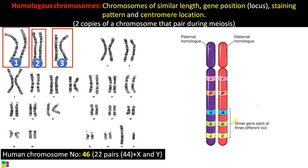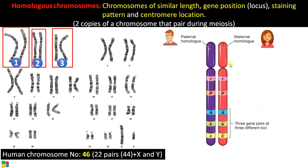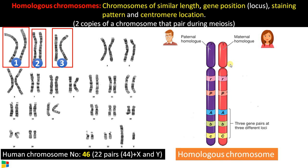Now let's zoom in on chromosome number one for better understanding. As per the definition of homologous chromosomes, these chromosomes are of similar length and have the same gene position — the gene position is called a locus. Here the gene R appears on both, and here the gene P appears on both. So they have the same gene position, same staining pattern, and the centromere location is also the same. One chromosome comes from the father and the second chromosome comes from the mother. This makes the homologous chromosome pair.